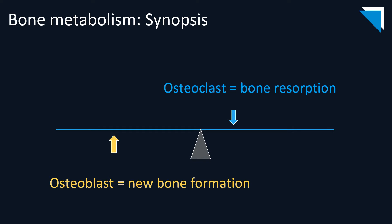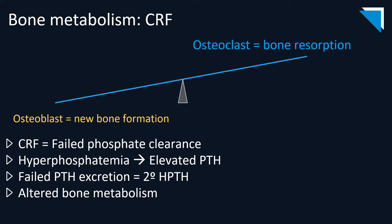To better understand the ramifications of chronic renal failure, we need to reacquaint ourselves with normal bone metabolism as being a balance between old bone resorption and new bone formation. Chronic renal failure upsets this balance as a consequence of failed phosphate clearance, leading to hyperphosphatemia that triggers an increase in parathyroid hormone production. PTH levels are further elevated by diminished renal clearance, contributing to the development of secondary hyperparathyroidism seen in people with declining renal function.